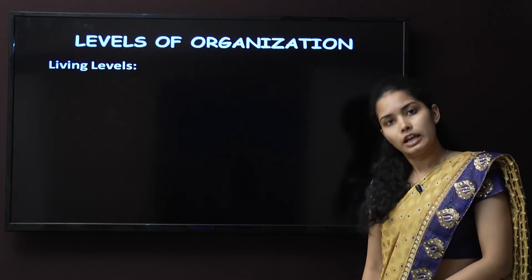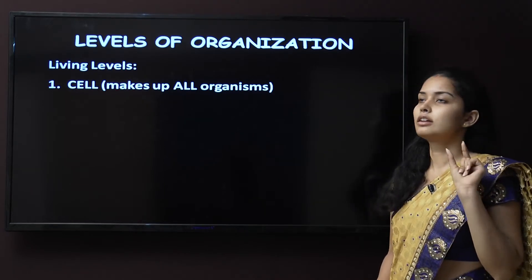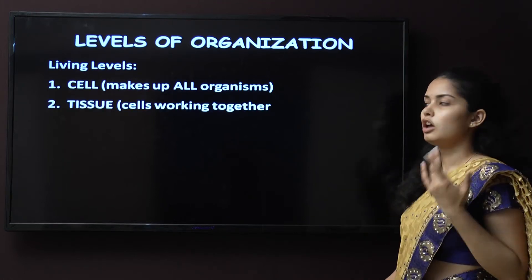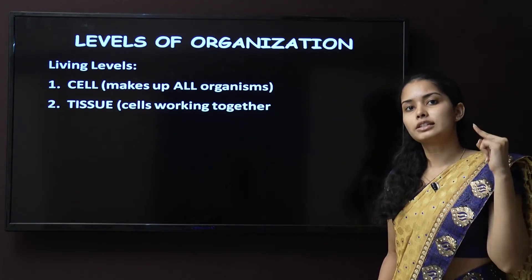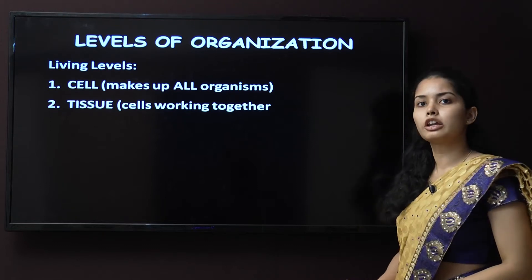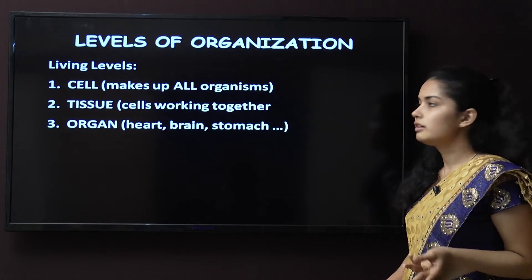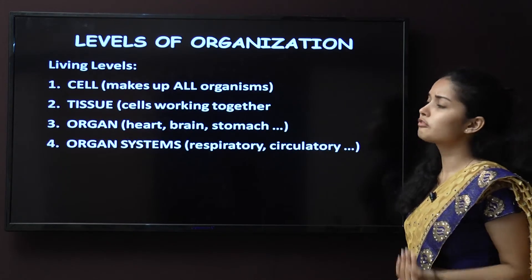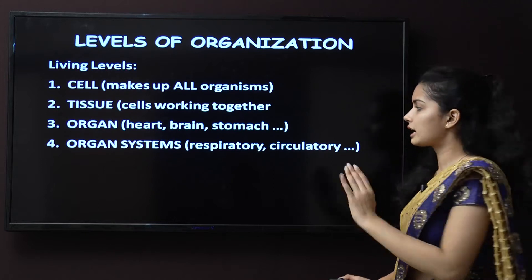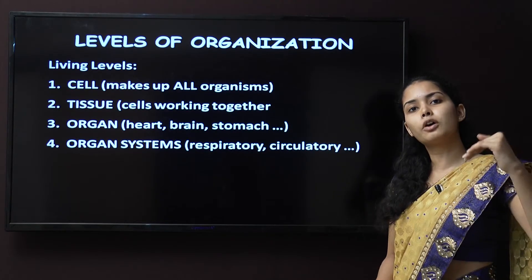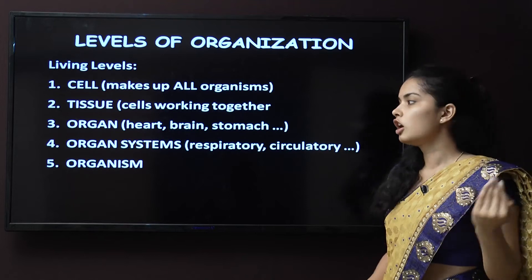In living organisms, the first level is the cell, the basic unit of life. From cells, tissues are formed — a group of cells performing the same function with the same structure. Cells working together are tissues. Then come organs such as the heart, brain, and stomach. Two or three organs combine to form an organ system — such as the digestive, respiratory, or circulatory system. All organ systems together make the whole organism.